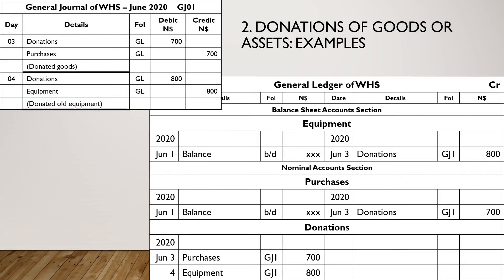Next, examples of donations of goods or assets: debit Donations, details Purchases; credit Purchases, details Donations. And the next transaction: debit Donations, details Equipment; credit Equipment, details Donations.